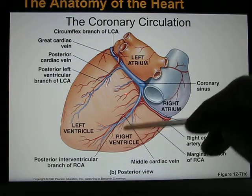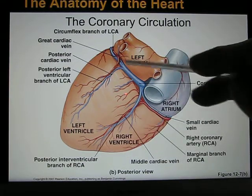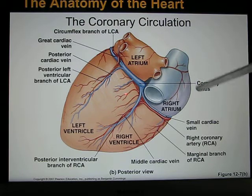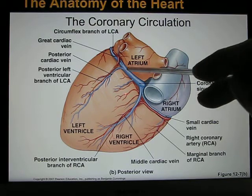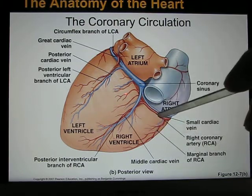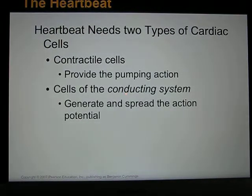After passing through the coronary arteries, blood becomes deoxygenated and drains into the coronary veins, which eventually flow through the coronary sinus back to the right atrium. It is like a small circulation surrounding the heart.